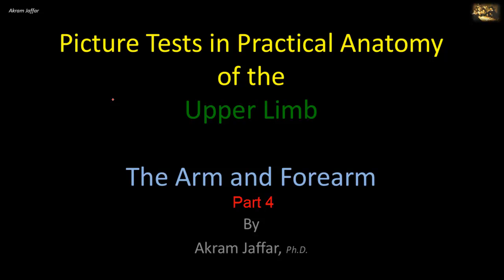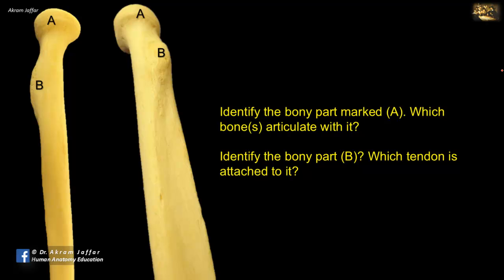Now I will deal with the anatomy of the arm and forearm. Question 1: Identify the bony part A, which bones articulate with it, and identify the bony part B, and which tendon is attached to it. This is the head of the radius, A.